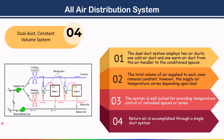The total volume of air supplied to each zone remains constant; however, the supply air temperature varies depending upon loads. This system is well suited for providing temperature control of individual spaces or zones. Return air is accomplished through a single duct system.